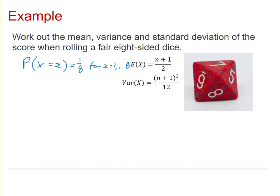And then I'm going to calculate both the expectation and the variance of this. So n is eight in this situation, so the expectation of x will simply be eight plus one over two, which is nine over two, or four and a half. And the variance of x is simply eight plus one squared over twelve, which actually gives you six point seven five, six and three quarters.